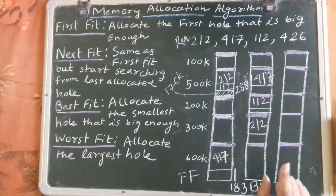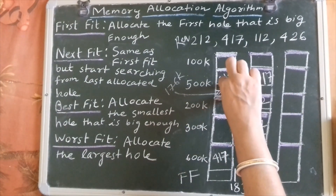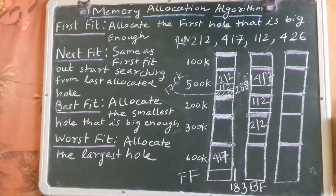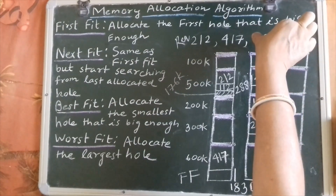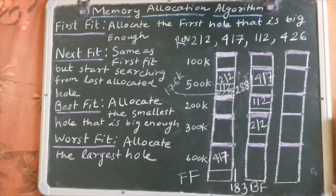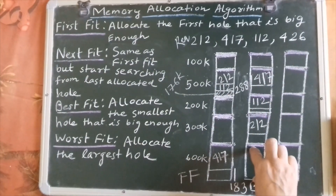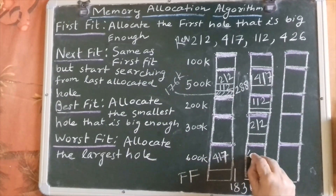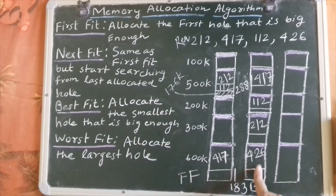According to dynamic memory allocation, an incoming process can also be placed in a leftover hole, not just a complete partition. So for the 426k process under best fit, the leftover 600k hole is capable enough, and we accommodate 426k there, with a leftover of 600 minus 426.